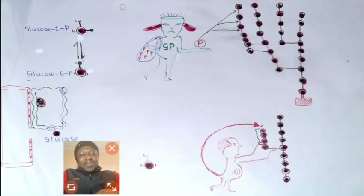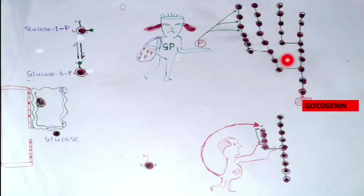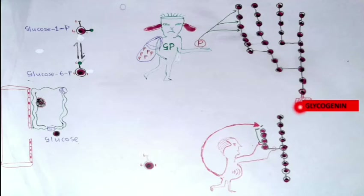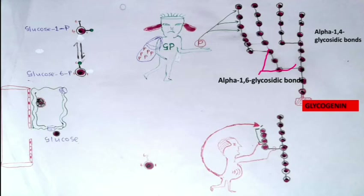Here is a sketch to help you understand glycogenolysis. This is glycogen with branches; its basic component is called glycogenin, which serves as the backbone. The bonds along the chain are alpha-1,4-glycosidic bonds, and for branching you have alpha-1,6-glycosidic bonds.